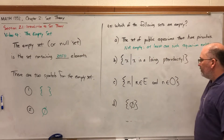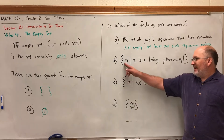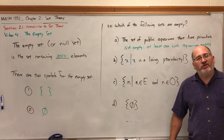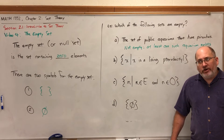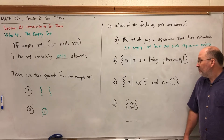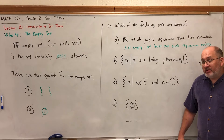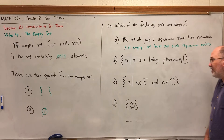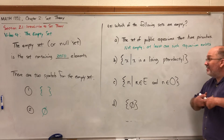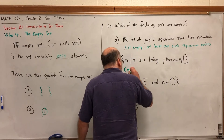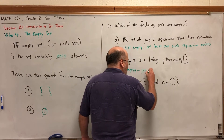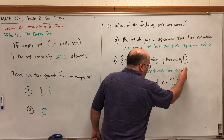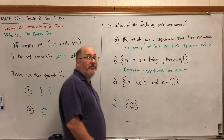Set B, which is in set builder notation: the set of X's such that X is a living pterodactyl. A pterodactyl is a flying type of dinosaur, and pretty sure they're all dead — there are no living pterodactyls. Jurassic Park might come true in the future, but for now, assuming there are no living pterodactyls, this set would be empty — namely because pterodactyls are extinct. Hence the word 'living' to make the set empty.